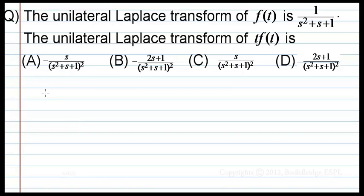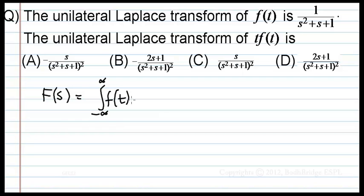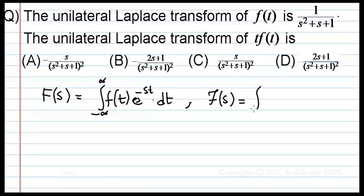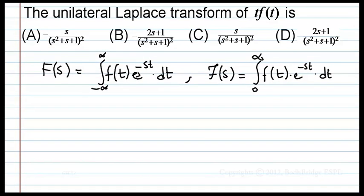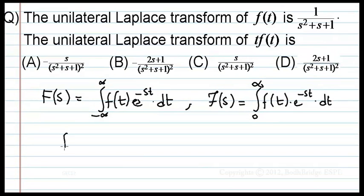First of all, what is the unilateral Laplace transform? Capital F(s) is the normal Laplace transform — that is, from minus infinity to infinity of f(t)·e^(−st) dt. The unilateral Laplace transform is represented as F(s) = integral from 0 to infinity of f(t)·e^(−st) dt. It is the transform applied only on one side. For this question, f(t) has unilateral Laplace transform 1/(s² + s + 1).